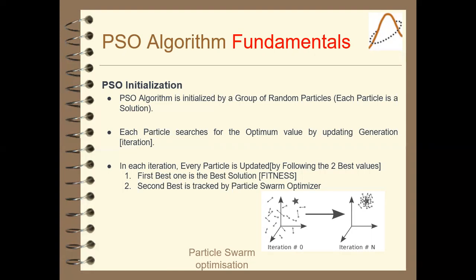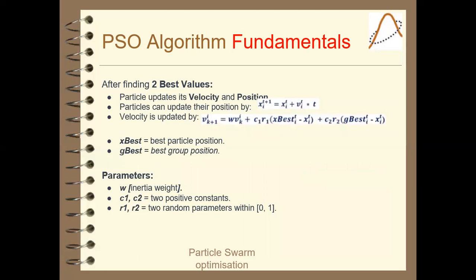Here is a quick overview of the PSO algorithm. The equation to update a particle's current position is that the next position can be found by adding the current position to the velocity. The velocity is updated by an equation in which we have the current velocity multiplied by some weight or inertia, a random factor, the current best position, and the global best position. X-best is the best particle position and G-best is the global or group best position. The hyperparameters are inertia, two positive constants, and two random parameters within the range of 0 and 1.